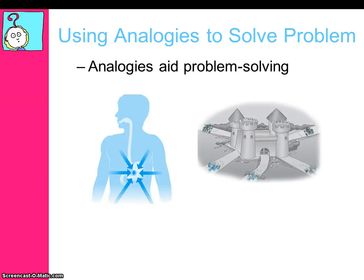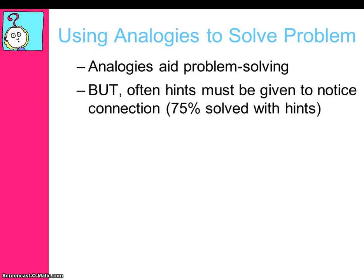The fortress problem is a direct analogy for the radiation problem and an example of how analogies can be used to aid problem solving. However, it's really important to note that not everyone notices the connection between the two stories — often people have to be given hints in order to notice the connection. When people are given hints, the rate of successful solution creation rises to 75%.